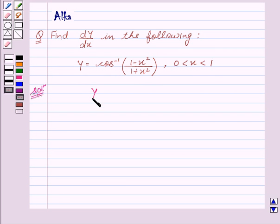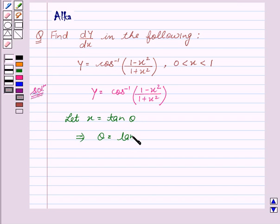We are given y equals cos inverse (1 minus x squared) upon (1 plus x squared). Now, let us assume that x equals tan theta. This implies theta equals tan inverse x, which is our first equation.